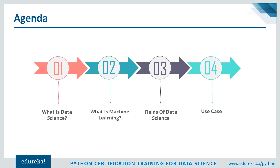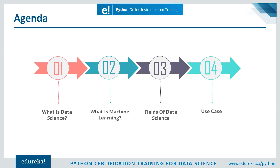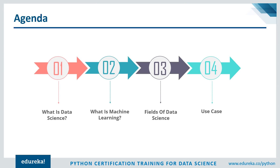We're going to begin this session with defining what exactly data science is. After that we'll move on and look at what machine learning is. We'll briefly discuss the fields that come under data science. After that we'll discuss a use case where we'll see how data science and machine learning are used in recommendation engines. So without any further delay, let's get started with our first topic.